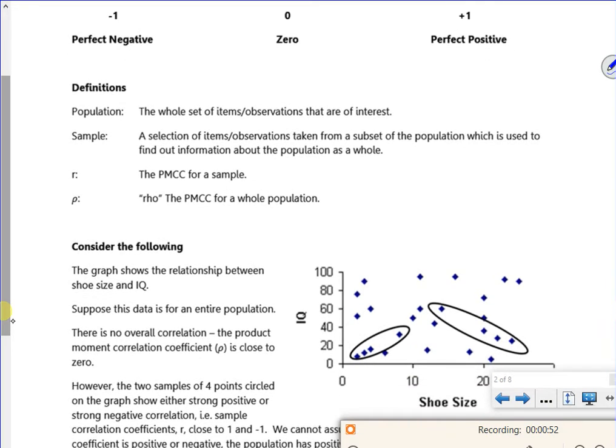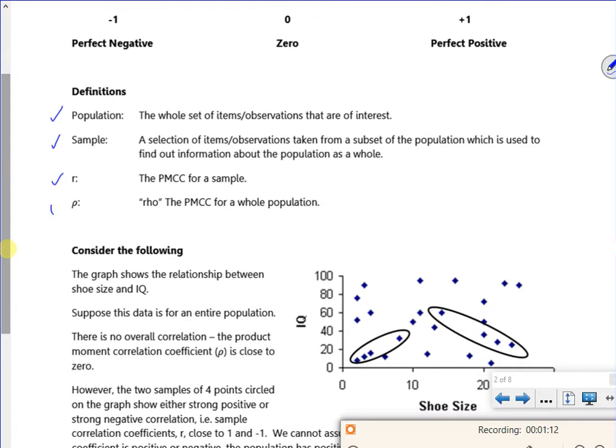The population is everything. The sample is where we grab some data from it, hopefully randomly. R is our letter that we use for the PMCC. Now we've got another one which is rho, and that is the R value for the whole population. What hypothesis testing does, it checks your sample R value against the rho for the population. And it tests to see if your sample looks like the population or if it doesn't look like the population.